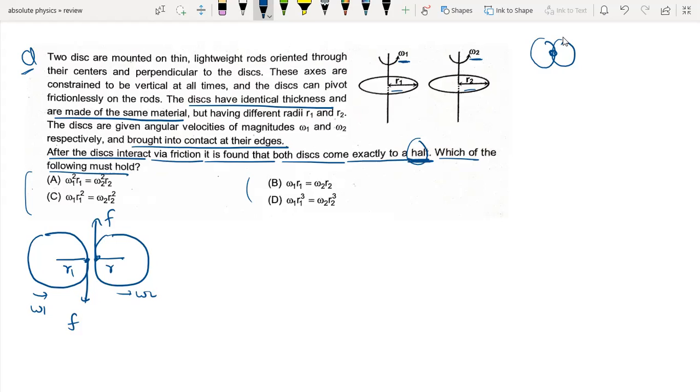Friction will provide angular impulse. Angular impulse is equal to tau dt, which equals F into r times dt, which equals L final minus L initial.